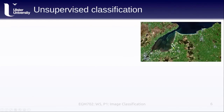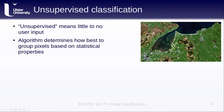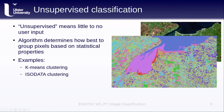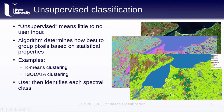Unsupervised classification means we have little to no user input. Instead, the algorithm determines how best to group the pixels based on their statistical properties. Common examples include k-means clustering and isodata clustering, which produced the image shown here. The output classes themselves have no meaning — they're just grouped based on the statistics of the image data. The user then has to identify what each spectral class represents and give the classes meaning in order for them to be useful.